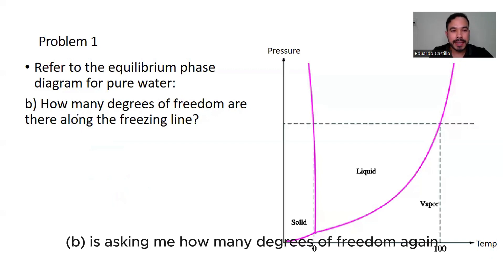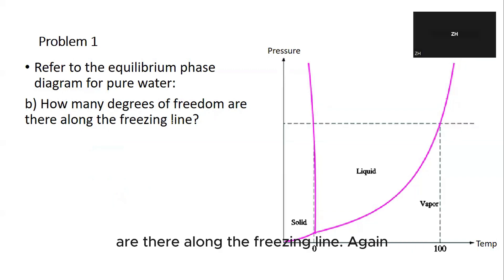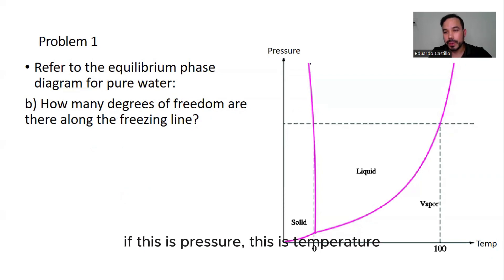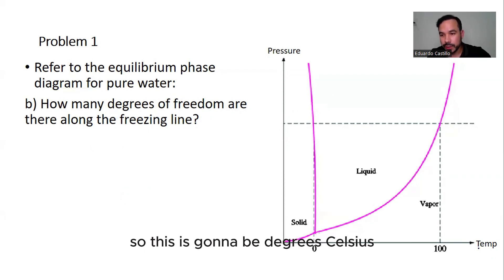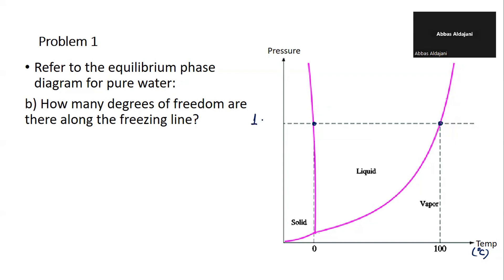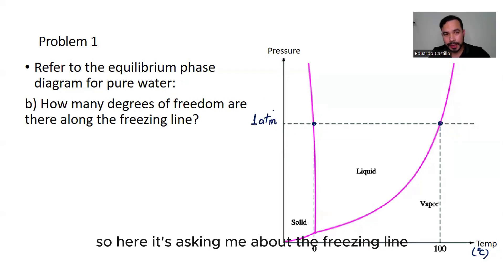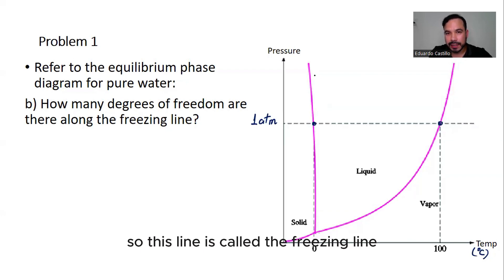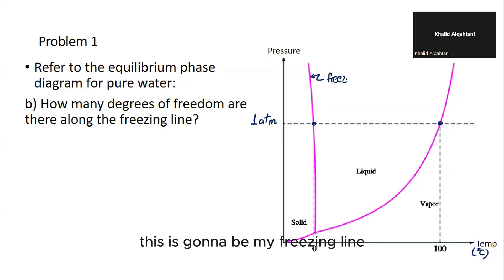Now part B is asking how many degrees of freedom there are along the freezing line. Again, with pressure on the vertical axis and temperature (in degrees Celsius) on the horizontal axis, I can identify the freezing line — the line separating solid and liquid phases.